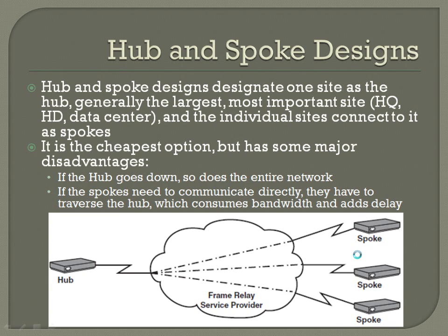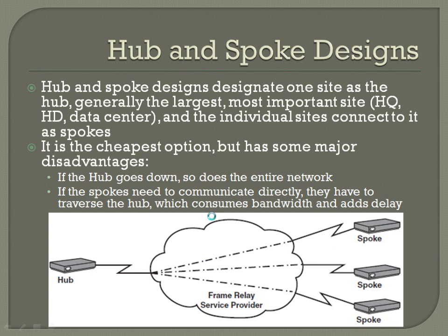Hub and spoke has advantages and disadvantages. The big advantage is it's the cheapest option. The disadvantage is that if the hub goes down, the entire network goes down — there's no redundancy whatsoever. Some people do a dual hub and spoke design for some redundancy, but it still has two points of major failure. Also, if spokes need to communicate directly, they have to traverse the hub, which consumes bandwidth and adds delay. For example, if you're running VoIP and one spoke needs to call another, you effectively double the delay instead of communicating through one direct PVC.